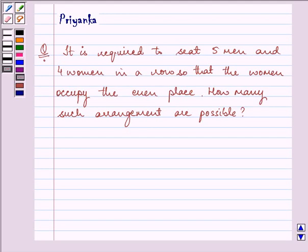Hi children, how are you? I am Priyanka and let us discuss the following question. It is required to seat 5 men and 4 women in a row so that the women occupy the even place.